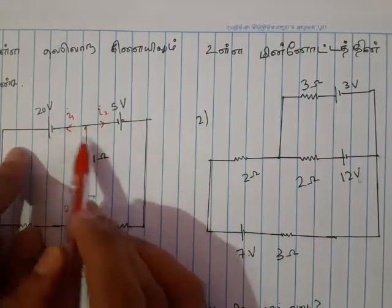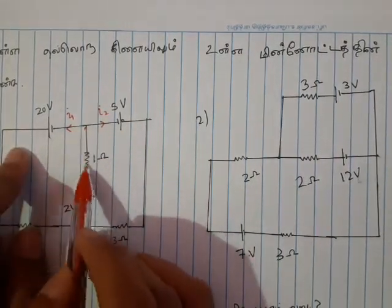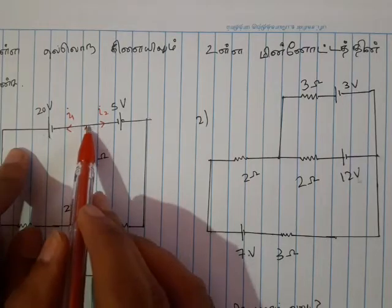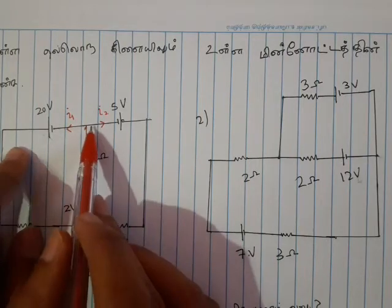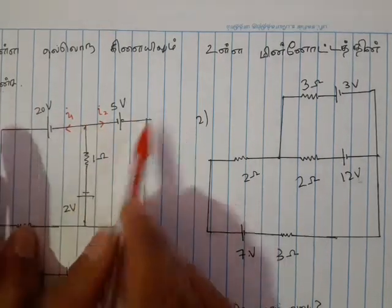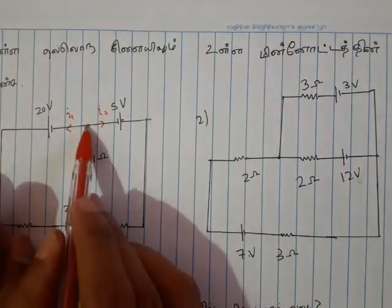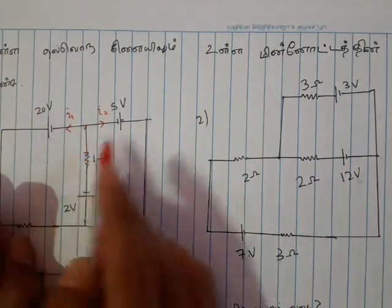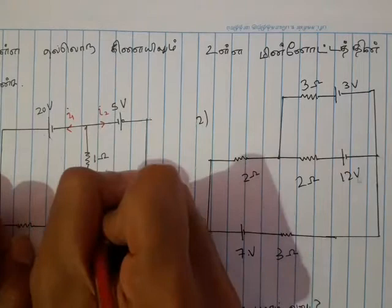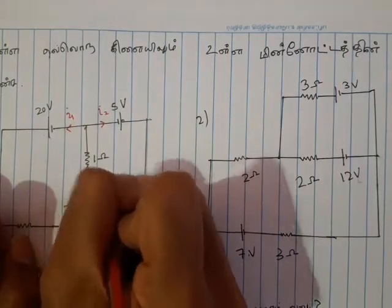If the second one has i1 plus i2, then I have two. So this one is the same thing — I will show you the same thing.